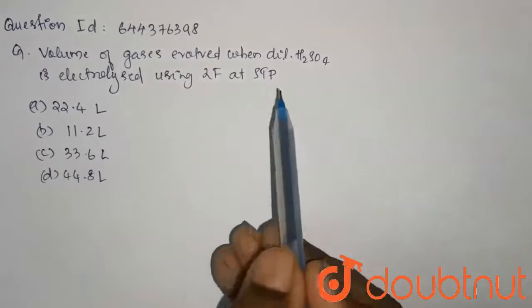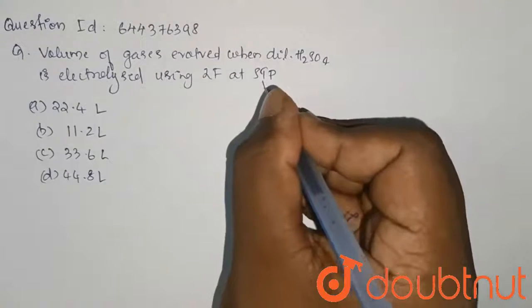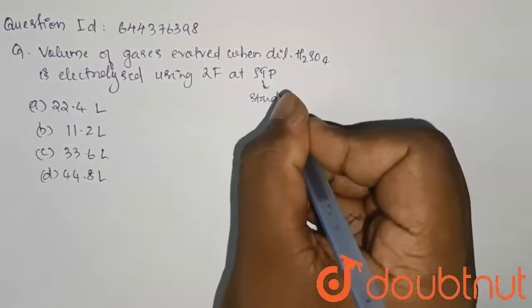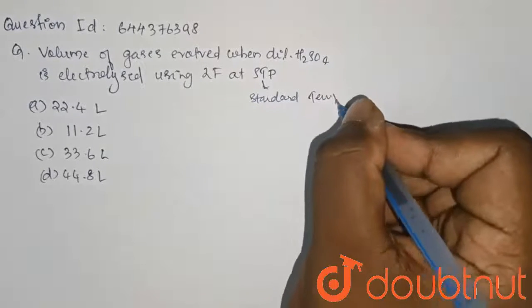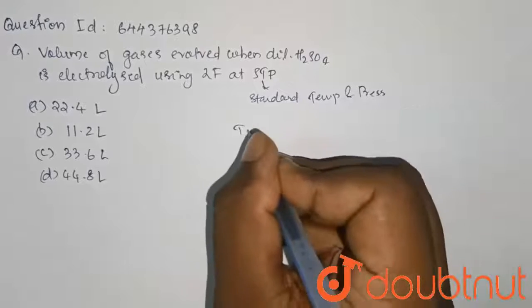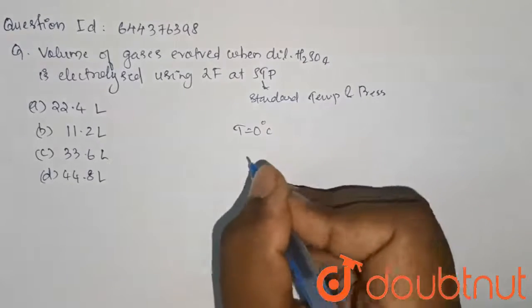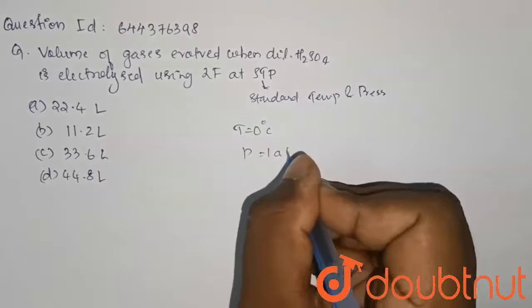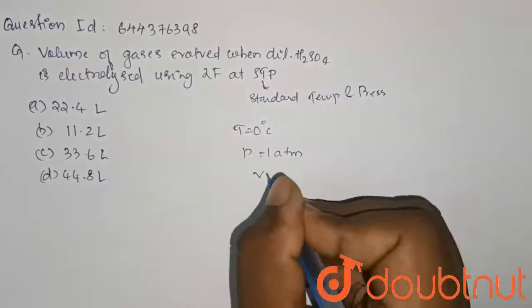Let's solve it. As you know, STP is standard temperature and pressure. We can write temperature equals 0 degrees Celsius, pressure equals 1 atmosphere, and we have to calculate the volume.